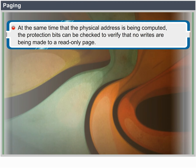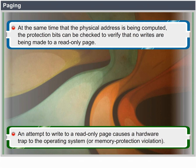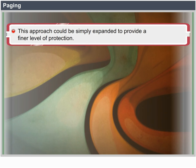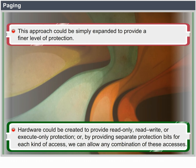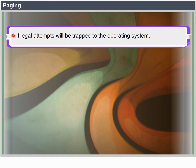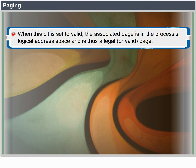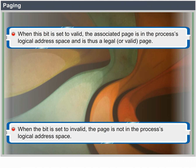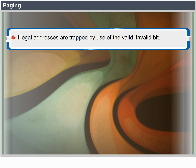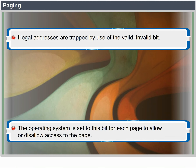Every reference to memory goes through the page table to find the correct frame number. At the same time the physical address is being computed, the protection bits can be checked to verify that no writes are being made to a read-only page. An attempt to write to a read-only page causes a hardware trap to the operating system. We can create hardware to provide read-only, read-write, or execute-only protection. One additional bit generally attached to each entry in the page table is a valid-invalid bit. When set to valid, the associated page is in the process's logical address space and is a legal page. When set to invalid, the page is not in the processor's logical address space.